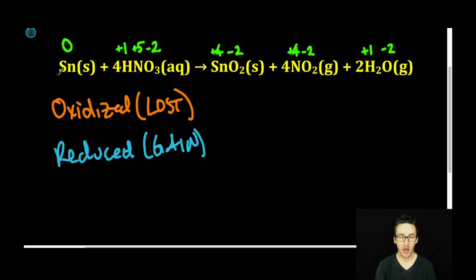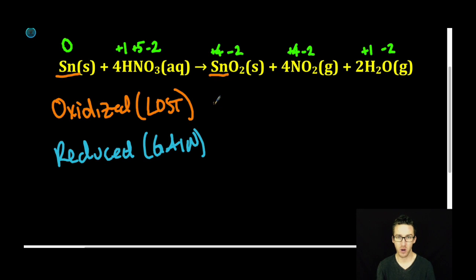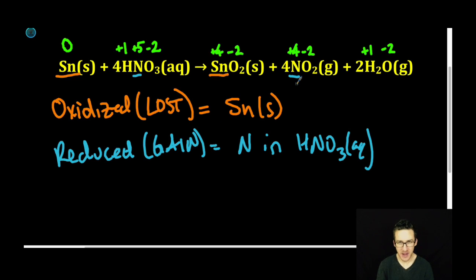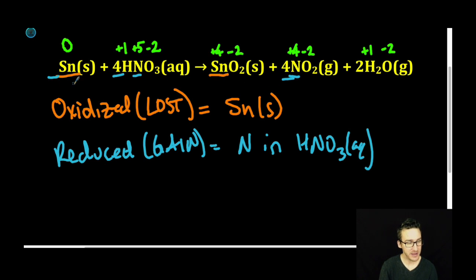As we scan our equation and the oxidation states we've assigned, we need to determine which has been oxidized or lost electrons. In this case, tin goes from an oxidation state of zero to plus four — tin is our winner here, it has lost four electrons. Now, who has gained electrons? Nitrogen. Our nitrogen in the HNO₃ only goes from plus five to plus four, meaning it only gained one electron, but tin lost four. Notice our coefficients of four — for each one tin that loses four electrons, four nitrogens will each gain one.